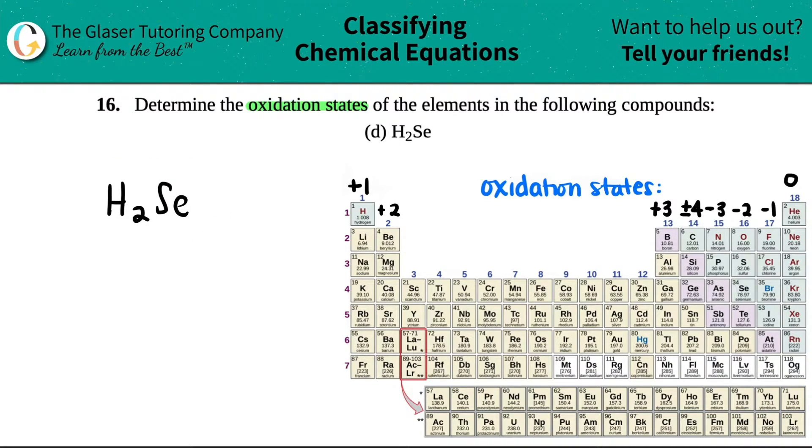We've done tons of problems in which we've made compounds, right? We usually take the charges - one was positive, one was negative - we crisscrossed them down to get the compound. So what we're going to do is we're going to do the opposite. We're going to crisscross the numbers back up to get the charges, and that's what the oxidation states are - they're just charges. These are your trend charges and they go by groups.